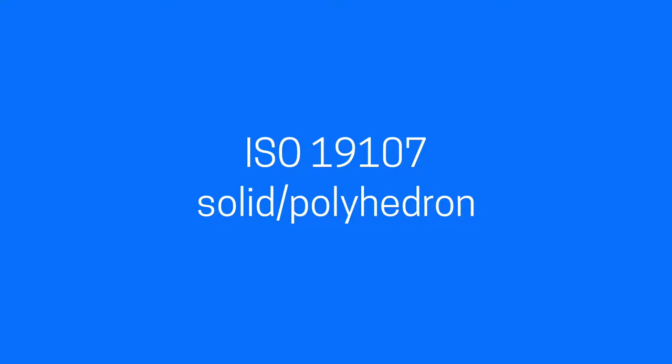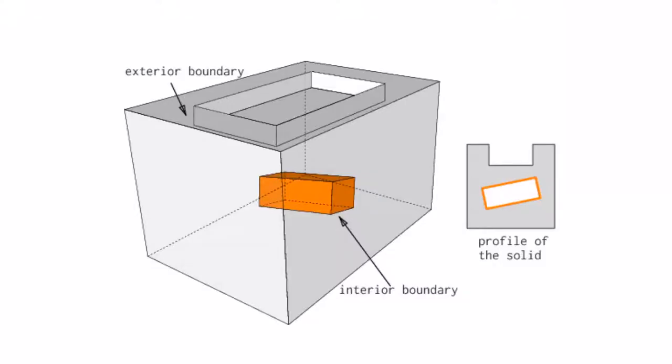Now let's look at the definition as found in the international standard ISO 19107 for solid, which is also called a polyhedron. This definition is a direct generalization of the 2D one for polygon. As you can see in the image here, a solid must have one exterior boundary. But in the case of a 3D volume or solid, then this exterior boundary is what we call the shell.